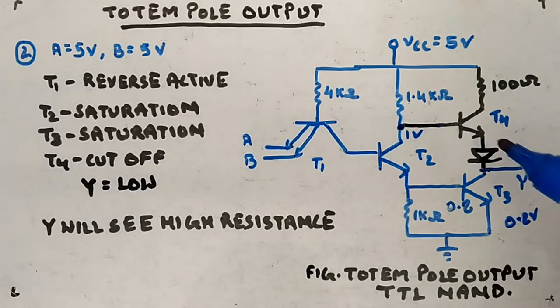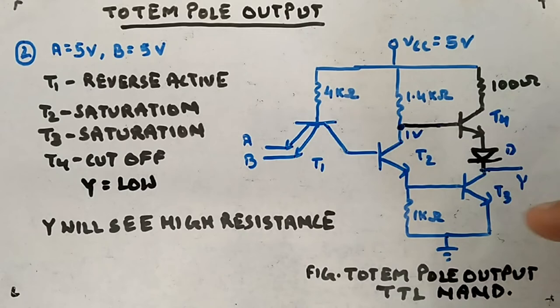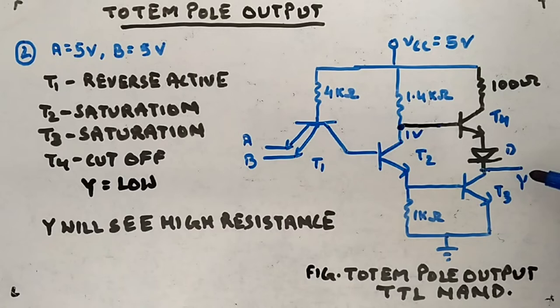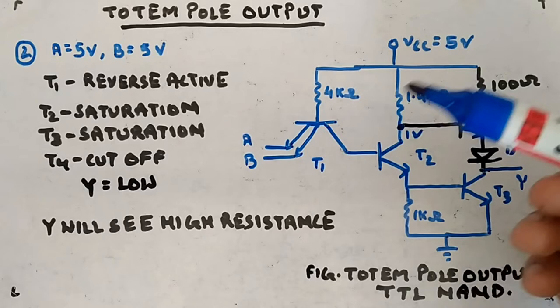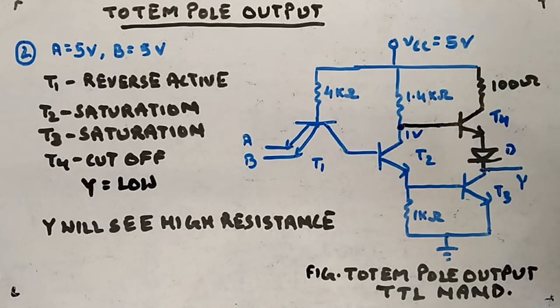When the output goes from low to high we want low resistance upward so it can charge any connected capacitor quickly. When the output goes from high to low we want high resistance upward. We have achieved both requirements. This arrangement is called active pull-up because it pulls up the output with actively changing resistance, while T3 is the pull-down element. This is what totem pole output means.